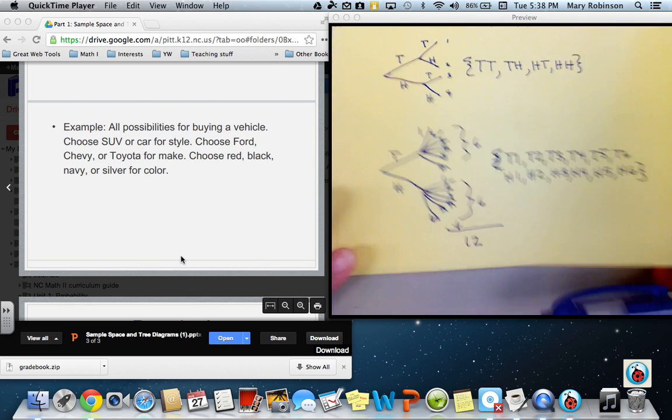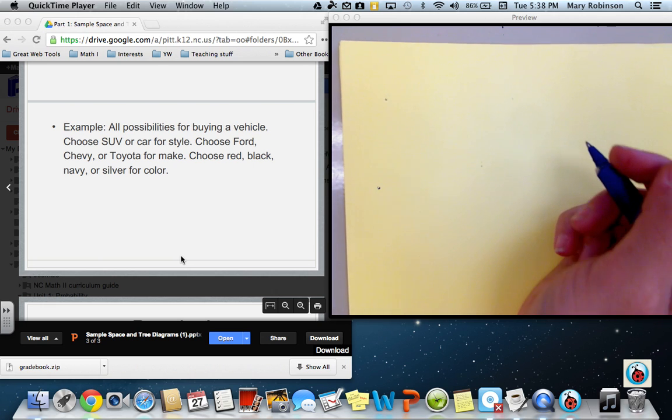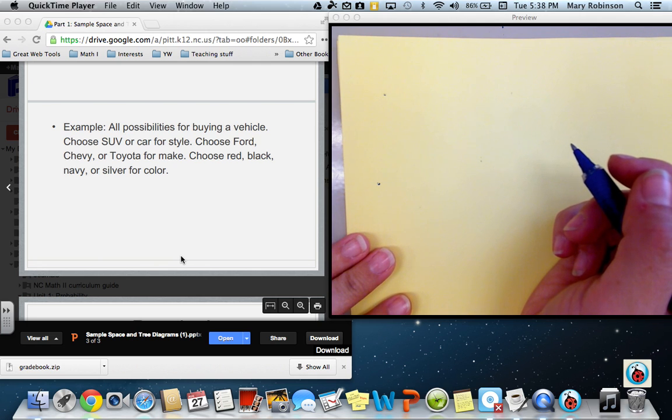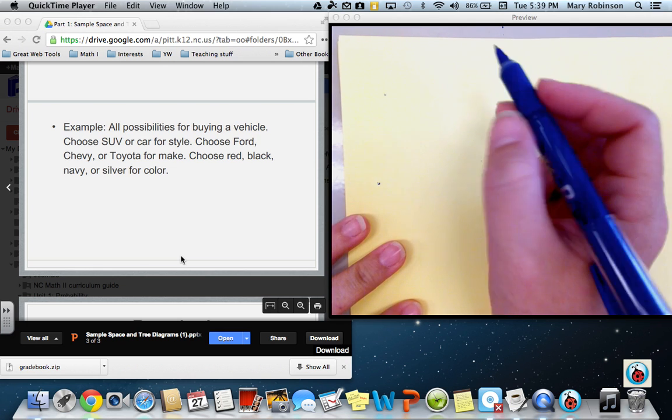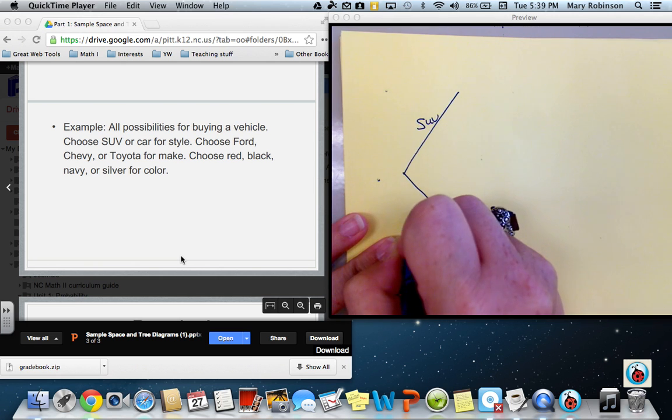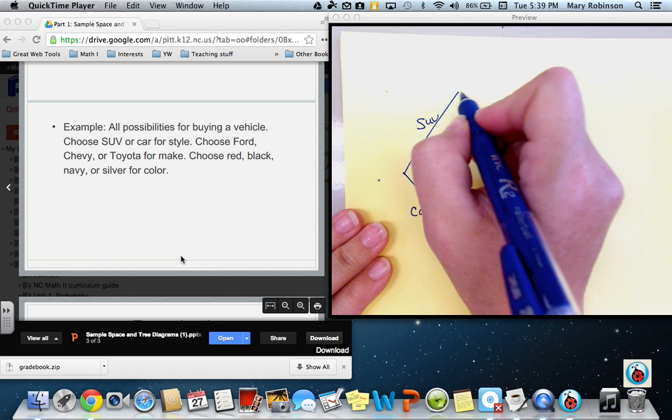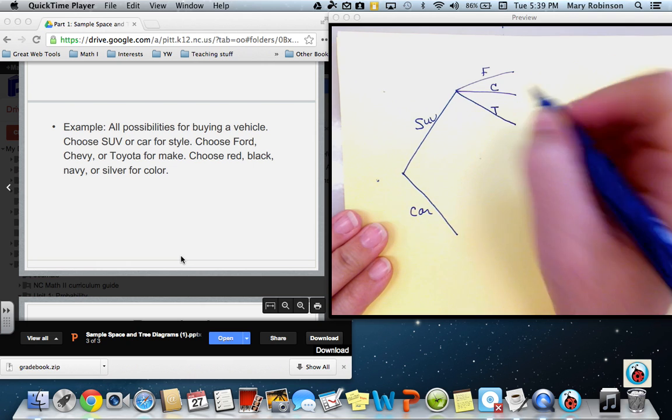A tree diagram for a much more complex example would have many more branches. For example, if we want to look at all possibilities for buying a vehicle, if we are choosing SUV or car for style, choosing Ford, Chevy, or Toyota for make, and choosing red, black, navy, or silver for color, we first want to decide whether we are choosing an SUV or a car. So when there are this many branches, I would want to make sure that I make this good and wide. So this would be SUV, and this would be car. After choosing the type of vehicle, we'd have to choose from Ford, Chevy, or Toyota. So I'll put up F for Ford, C for Chevy, and T for Toyota.